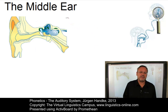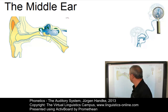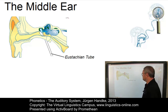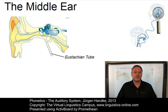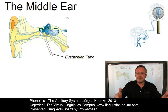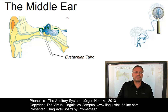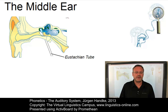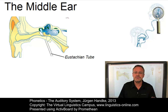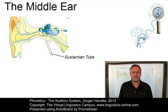The middle ear is a cavity which is filled with air via the eustachian tube, which is linked to the back of the nose and the throat. When the eardrum vibrates, due to the varying air pressure caused by sound waves, it causes the three small bones, the so-called ossicles, to move back and forth.